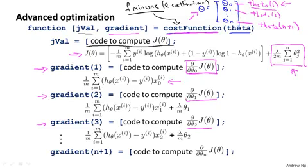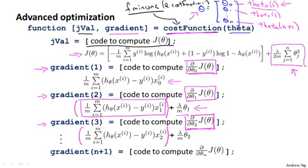And in particular, the derivative with respect to theta one, we worked this out on the previous slide as well, is equal to the original term and then minus lambda over m times theta one. Just so we parse this correctly, we can add parentheses here, right, so the summation doesn't extend. And similarly, this other term here looks like this with this additional term that we had on the previous slide that corresponds to the gradient from the regularization objective.